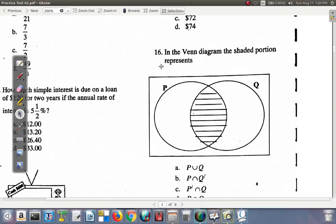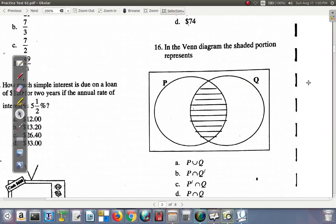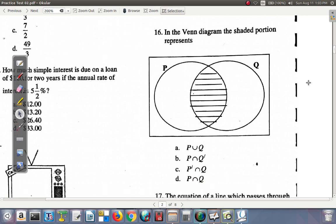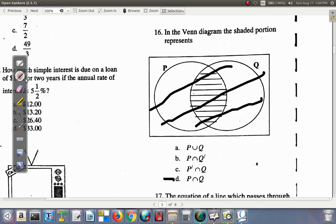Okay, question 16 of practice test 2, CSEC Mathematics Paper 1. In the Venn diagram, the shaded region represents - okay, definitely it is D, because what would be wrong with this? P union Q would be all of this, all right? That would be the union.